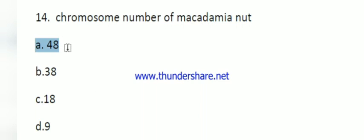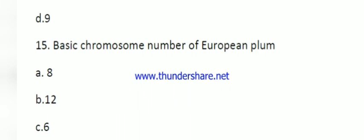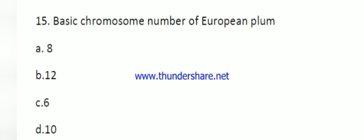Question number 15: basic chromosome number of European chromosome. The options are 8, 12, 6, and 10. The right answer is 8. The European chromosome is hexaploid in nature, that's why the basic chromosome number is 8.